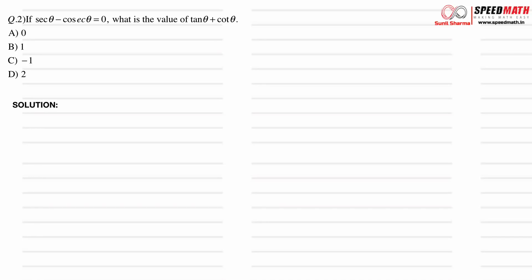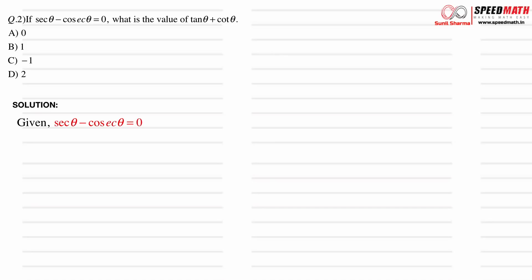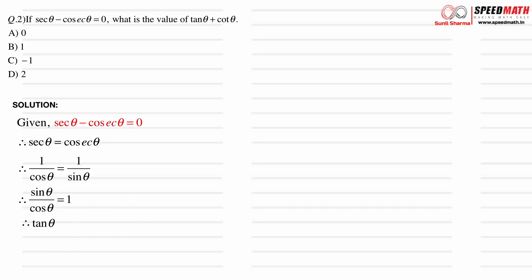The second question: if sec θ minus cosec θ equals 0, what is the value of tan θ plus cot θ? You have 10 seconds. Taking cosec θ to the other side gives sec θ equals cosec θ. Converting to sine and cosine: 1/cos θ equals 1/sin θ. Cross-multiplying gives sin θ/cos θ equals 1, which means tan θ equals 1. Since tan θ is 1, cot θ is also 1, so tan θ plus cot θ equals 2. Option D is correct.